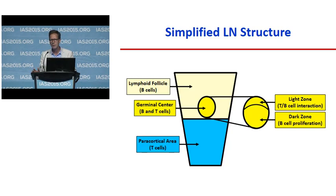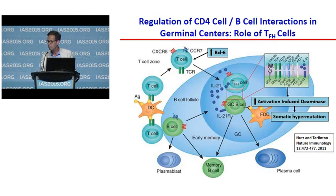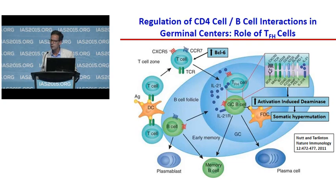The T cells that move into that area and orchestrate this interaction are called the T follicular helper cells. They start by interacting with dendritic cells and upregulate CXCR5, downregulate CCR7, and upregulate BCL6. This allows them to move into the germinal center where they interact with germinal center B cells, leading to the induction of activation-induced deaminase within the B cells, which leads to somatic hypermutation — and this is how we get the large amount of somatic hypermutation and affinity maturation of the antibody response.